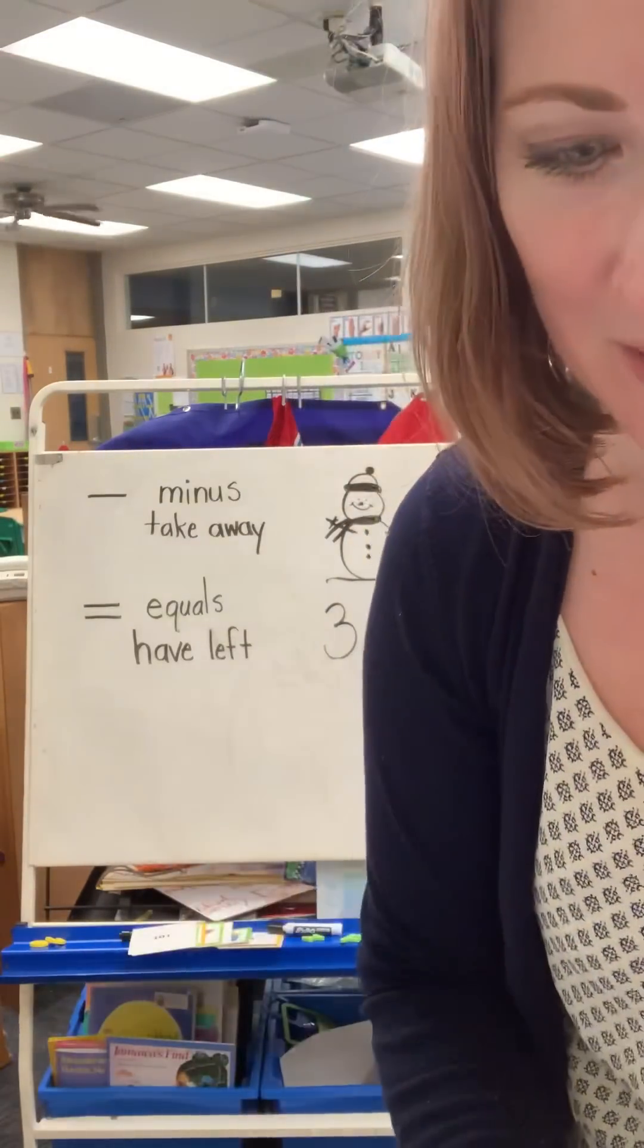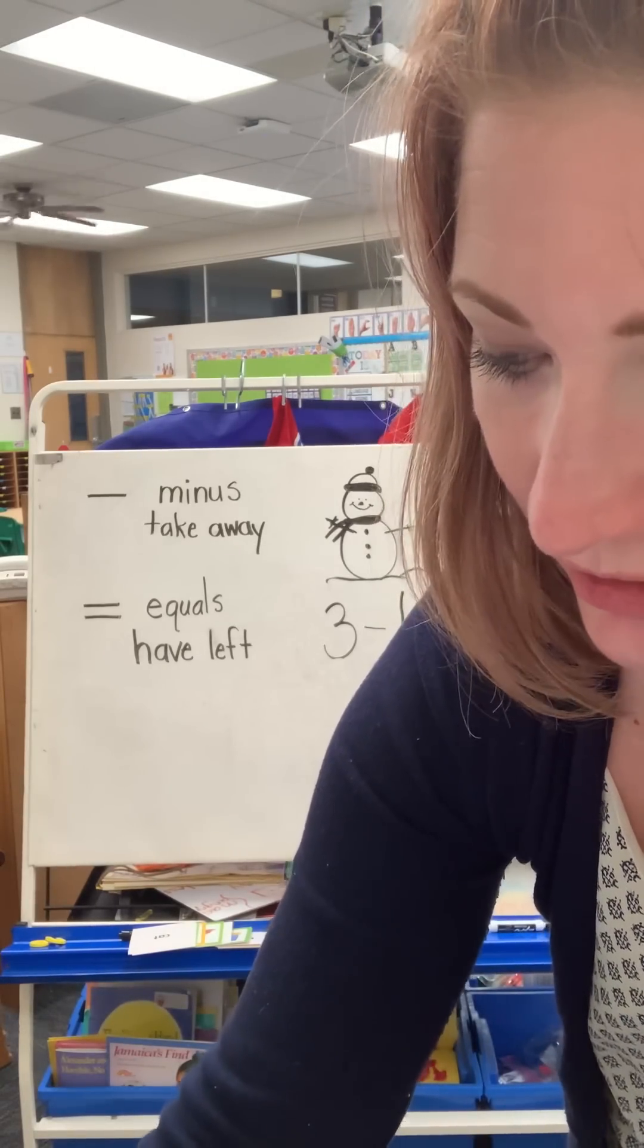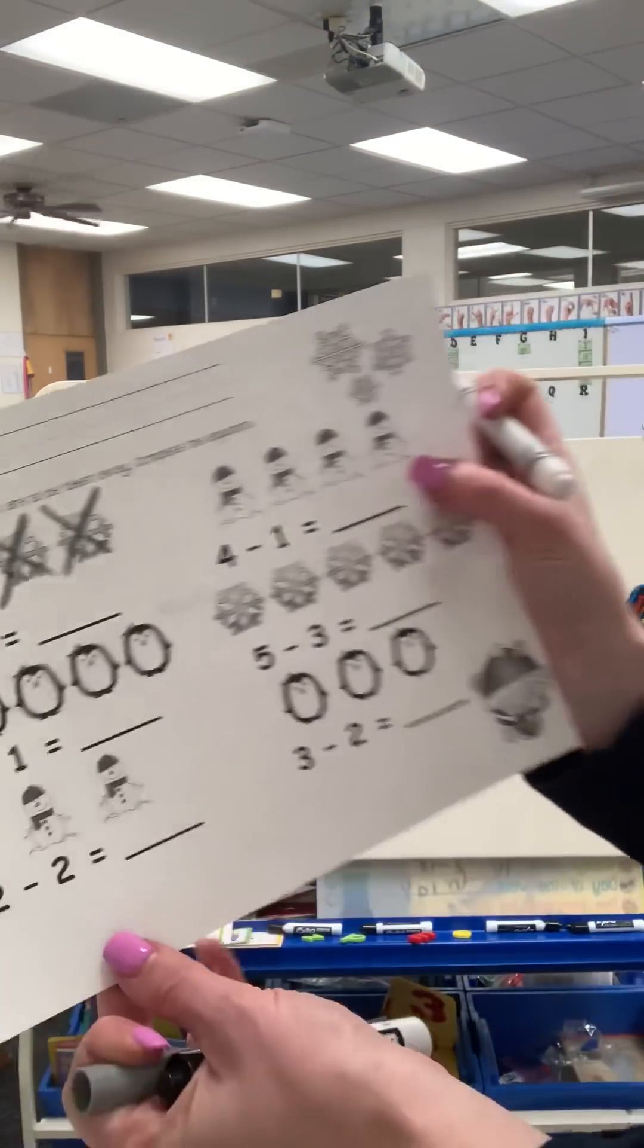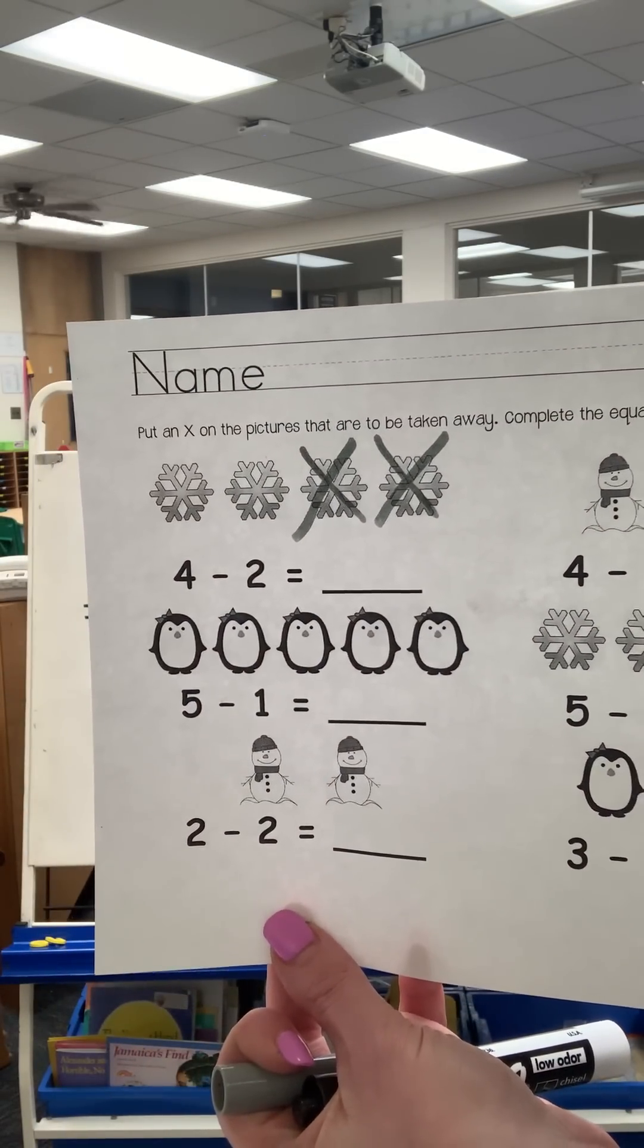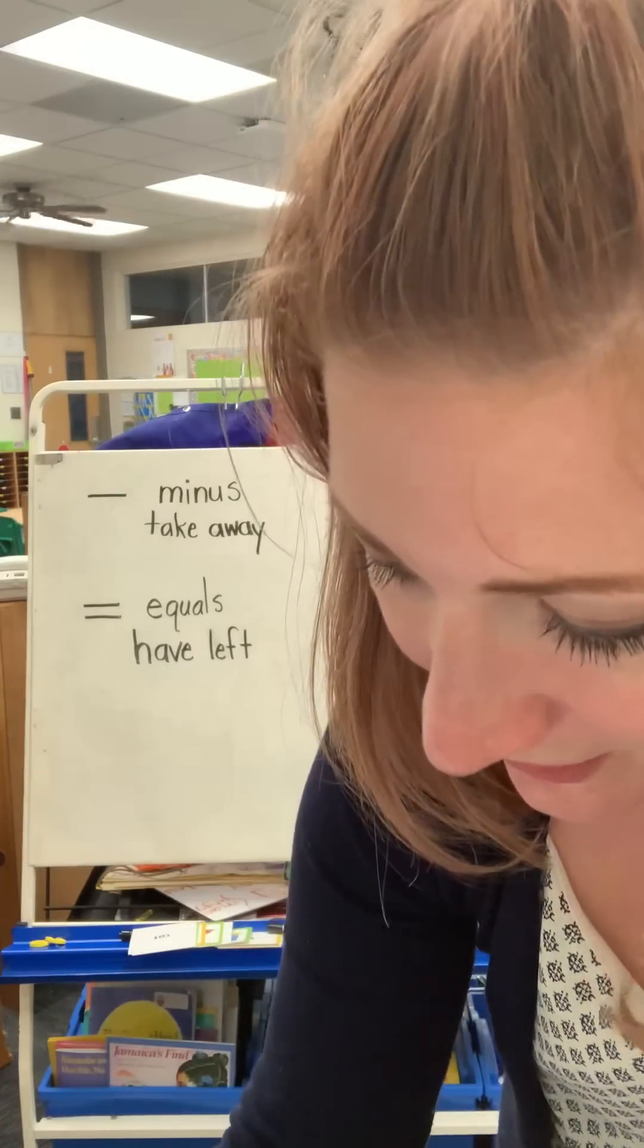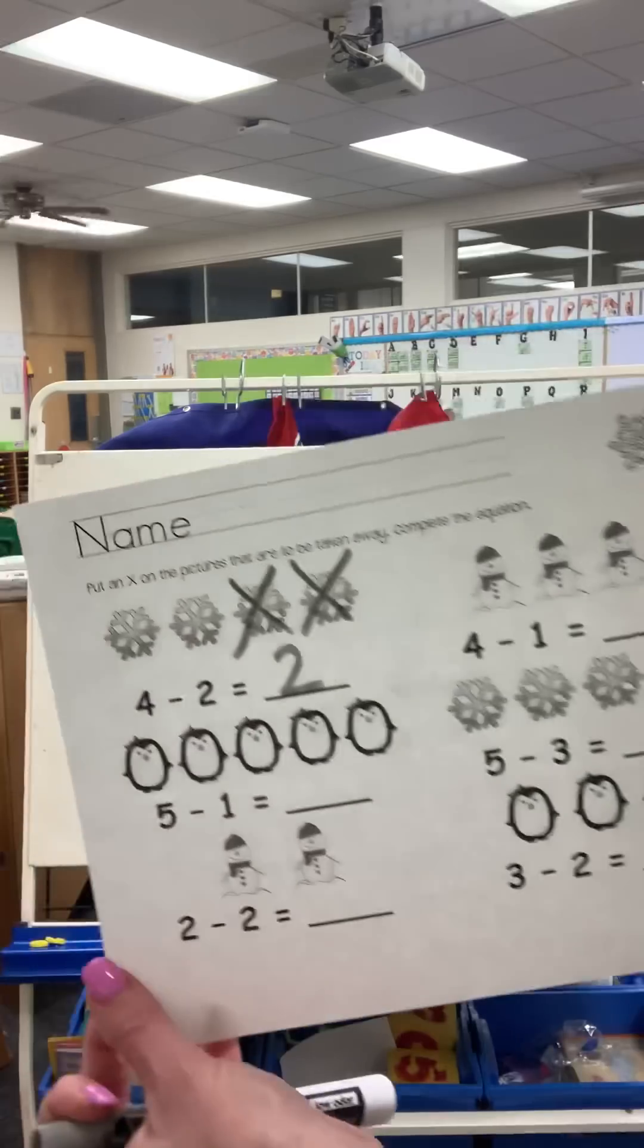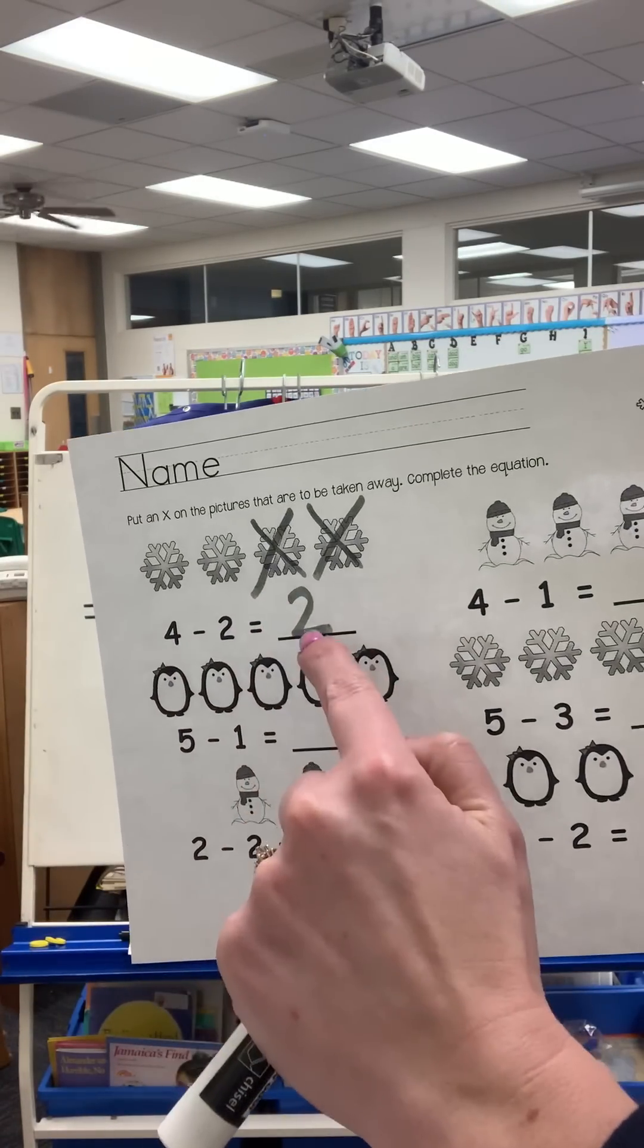Two snowflakes. So I'm going to put two X's to show that two went away. How many snowflakes are left? Great job. Two are left. Four minus two equals two.